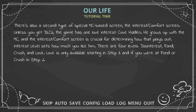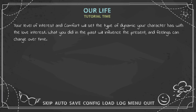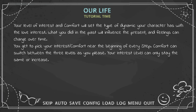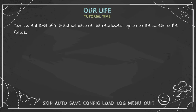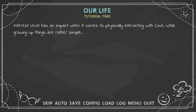Interest level sets how much you like Cove: there are four levels — Disinterest, Trust, Fond, Crush, and Love. Love is only available starting in Step 3. Comfort determines how you generally react and think when it comes to him: Nervous, Relaxed, or Direct. Your level of interest and comfort sets the dynamic your character has with the love interest. Interest can only stay the same or increase — for example, if you're Fond in Step 1, Disinterest won't be available in later steps.